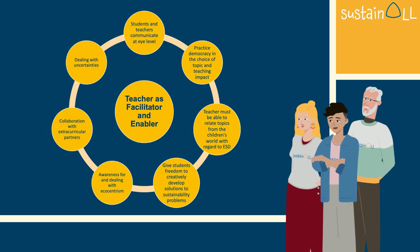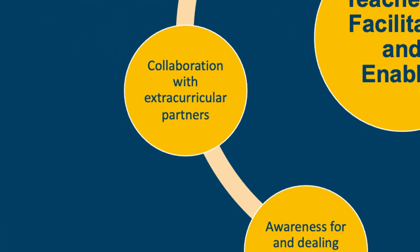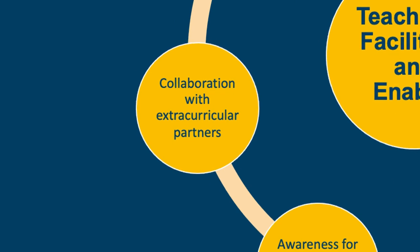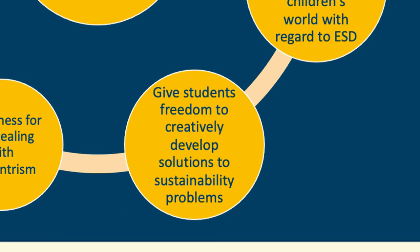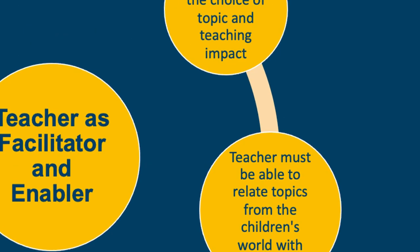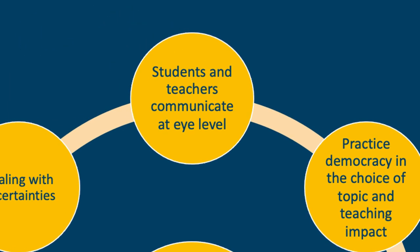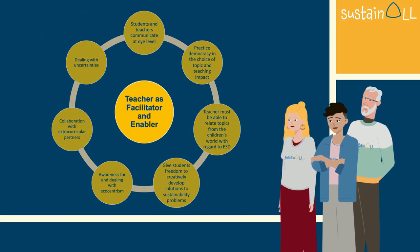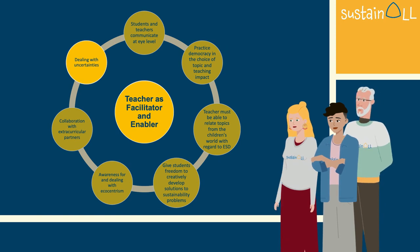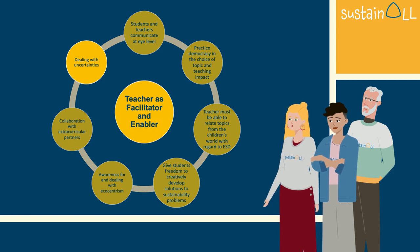From a meta perspective, this includes: awareness for and dealing with ecocentrism; collaboration with extracurricular partners; dealing with uncertainties; giving students freedom to creatively develop solutions to sustainability problems; practicing democracy in the choice of topic and teaching impact; students and teachers communicating at eye level; and teachers being able to relate topics from the children's world with regard to ESD. Dealing with uncertainties seems to be a particularly important aspect of education for sustainable development. Teachers must be facilitators for a world we do not yet know.